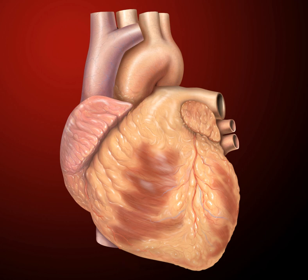In the wall of the right atrium is an oval-shaped depression known as the fossa ovalis, which is a remnant of an opening in the fetal heart known as the foramen ovale. Most of the internal surface of the right atrium is smooth, the fossa ovalis is medial, and the anterior surface has prominent ridges of pectinate muscles. The right atrium is connected to the right ventricle by the tricuspid valve.